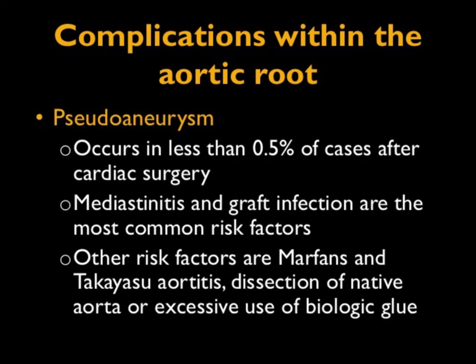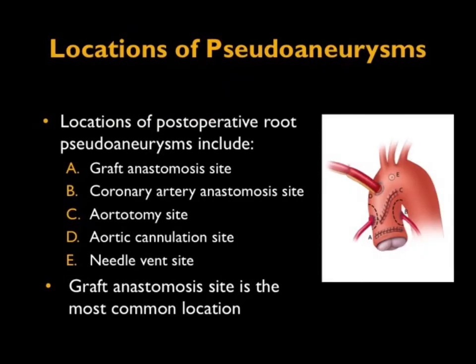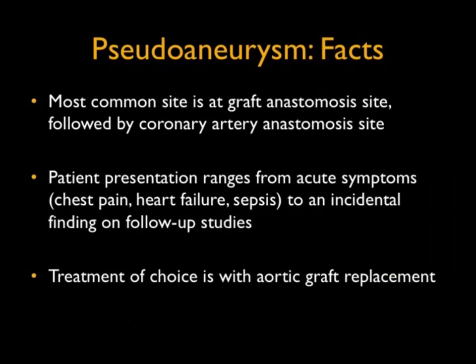Pseudoaneurysms occur in less than 0.5% of cases after cardiac surgery. Mediastinitis and graft infection are the most common risk factors. Patients with connective tissue diseases such as Marfan's or Takayasu's are at higher risk, and excessive use of biologic glue can also increase incidence. Pseudoaneurysm locations include the graft anastomotic site — the most common — coronary artery anastomotic site, aortotomy site, cannulation site, or needle vent site. The graft anastomotic site is number one, coronary artery anastomotic site is number two.